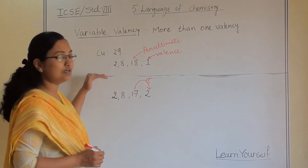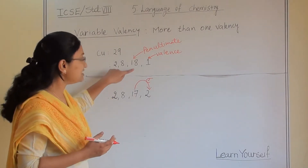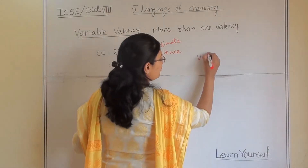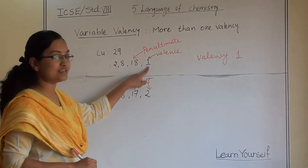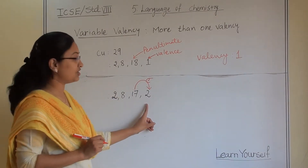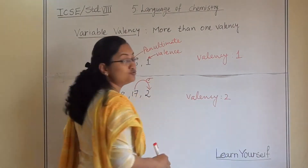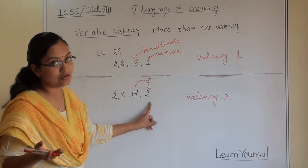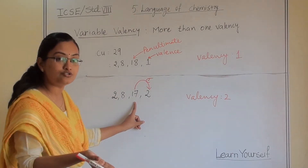So both these states can be seen in copper. When copper shows the first electronic configuration, the valency of copper in that state will be 1, because it has one electron in its outermost shell. When copper shows the second electronic configuration, the valency will be 2, because it has 2 electrons in its outermost shell — one electron from the penultimate shell has jumped to the valence shell.